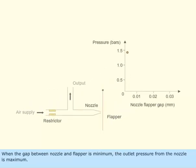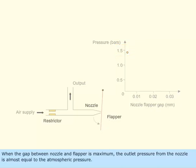When the gap between nozzle and flapper is minimum, the outlet pressure from the nozzle is maximum. When the gap between nozzle and flapper is maximum, the outlet pressure from the nozzle is almost equal to the atmospheric pressure.